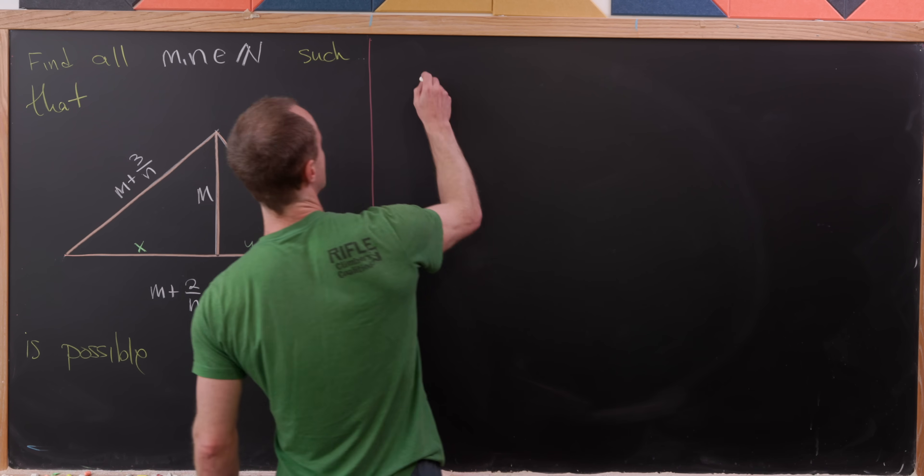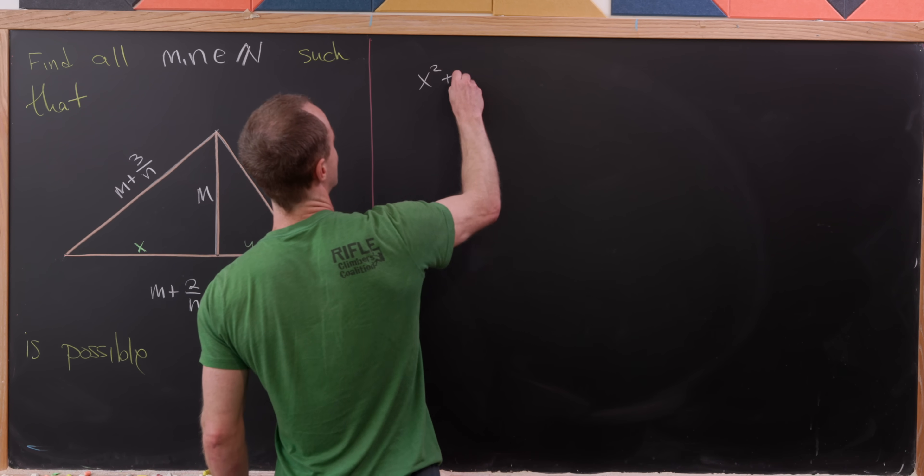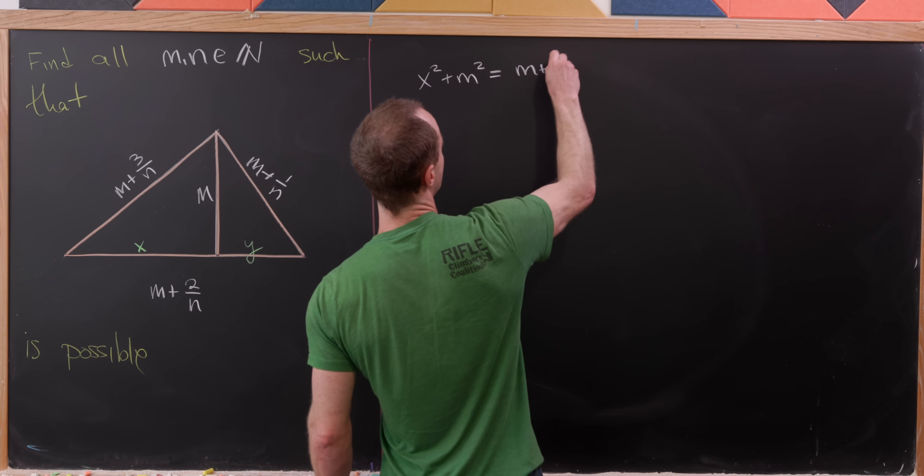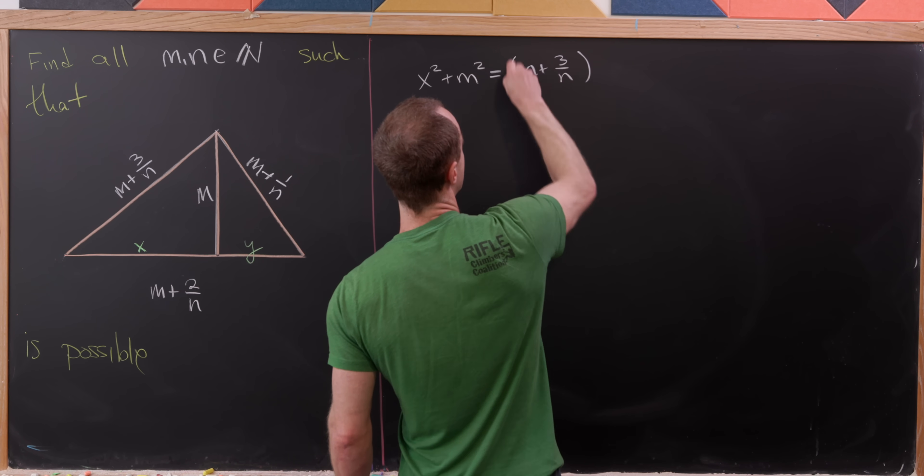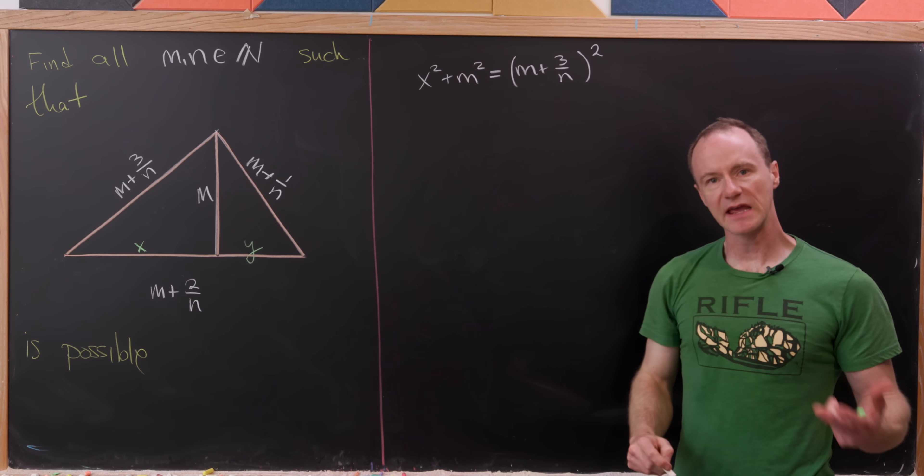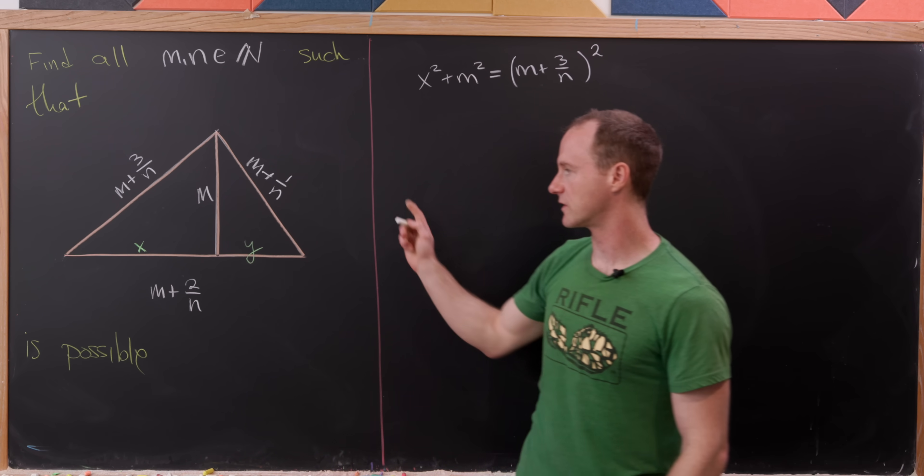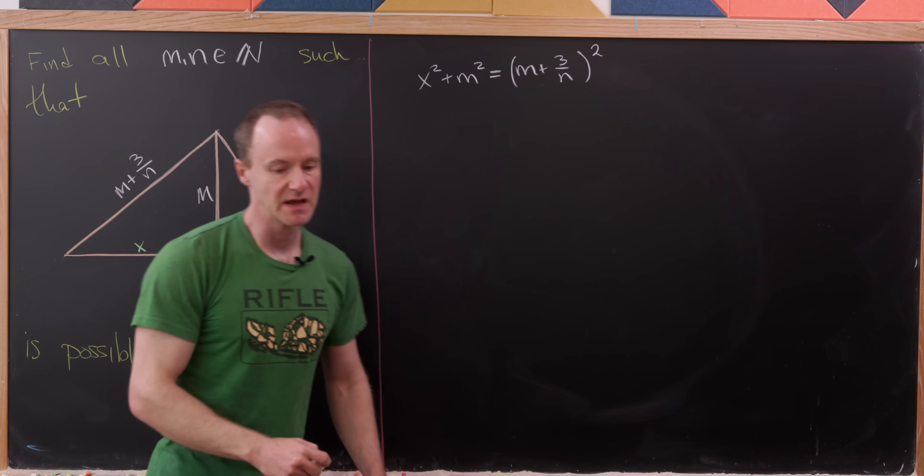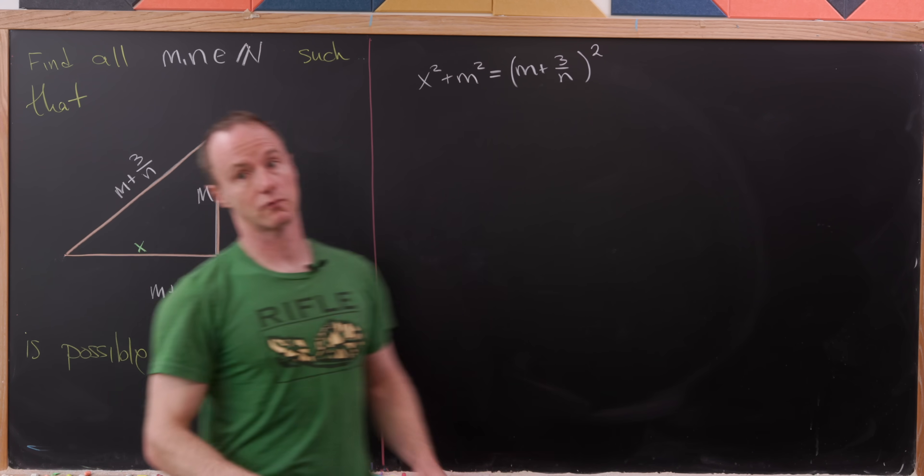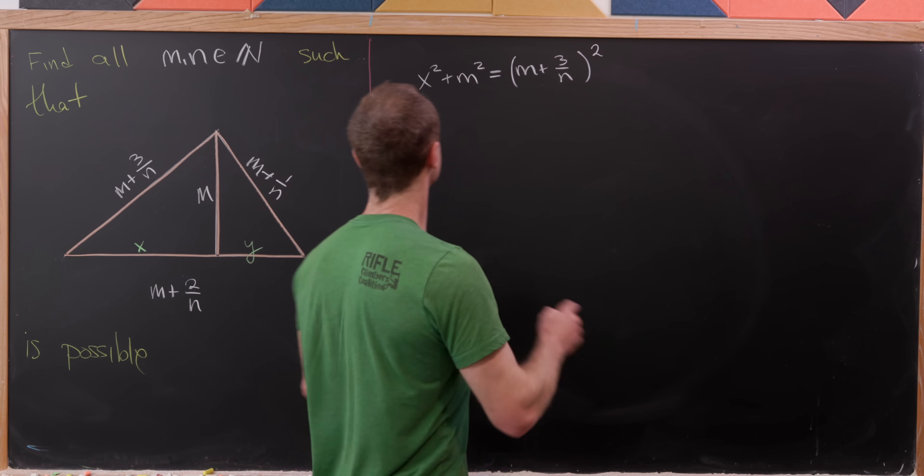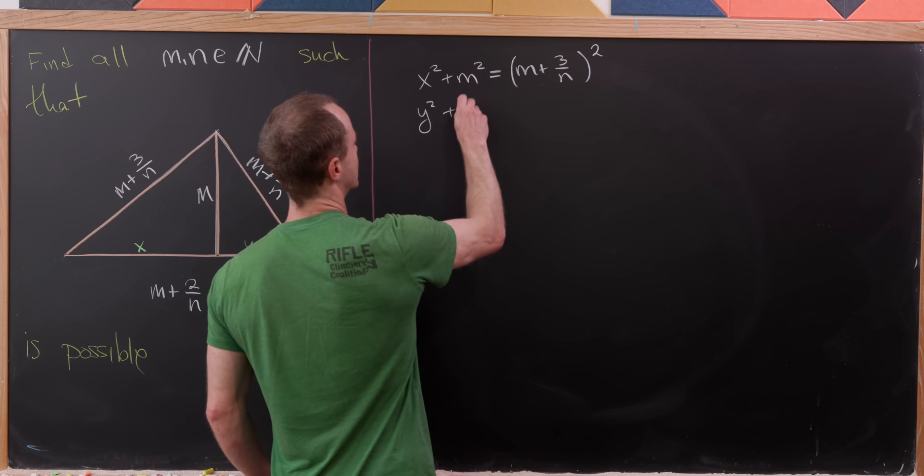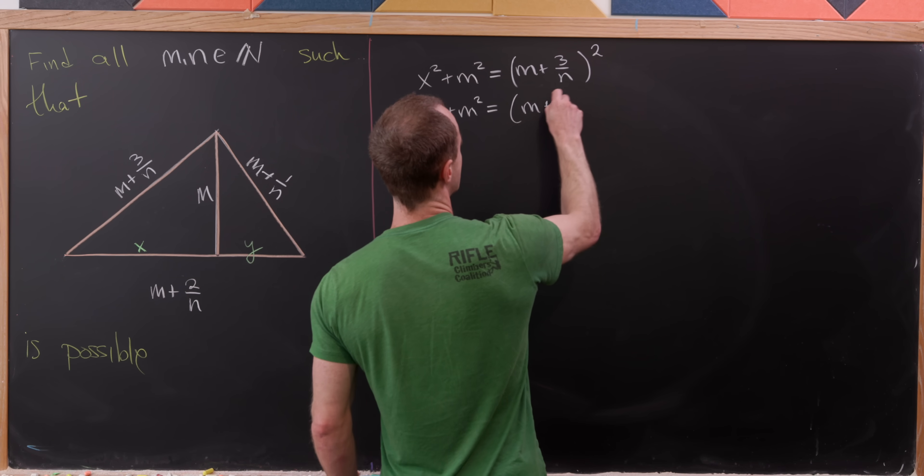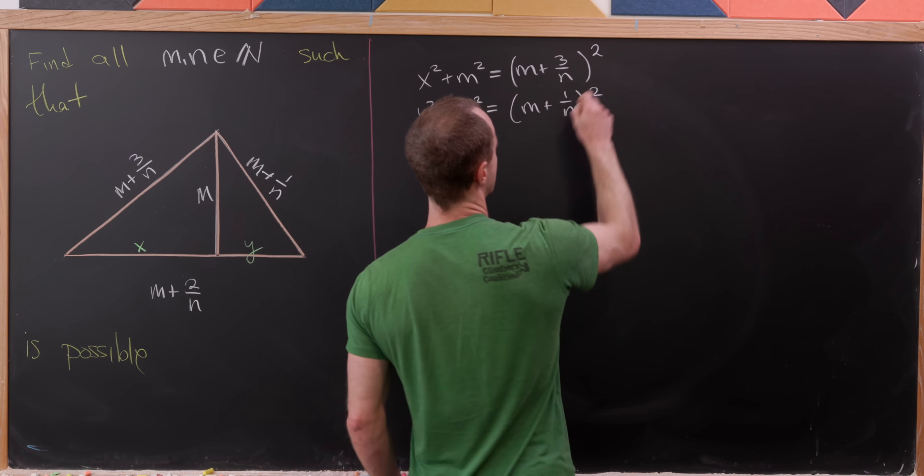So in particular, we know that x squared plus m squared will be equal to m plus 3 over n squared. And that's from applying the Pythagorean theorem on the left-hand right triangle. And now let's do it on the right-hand right triangle. That's going to give us y squared plus m squared equals m plus 1 over n squared.